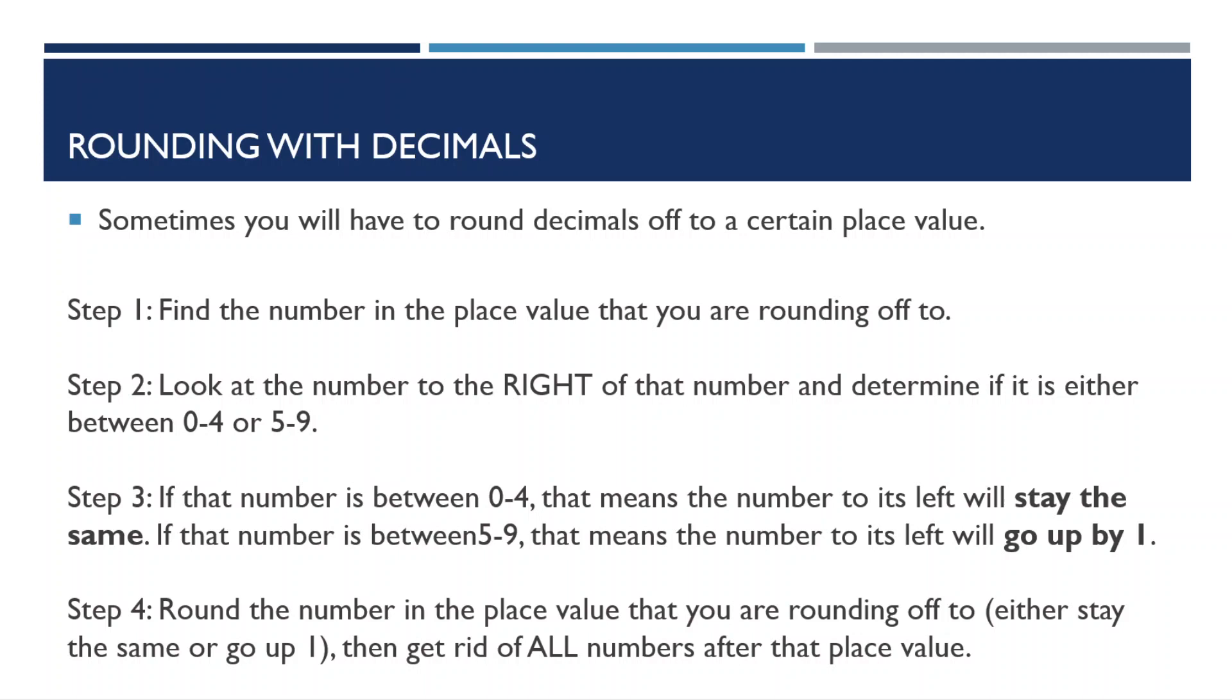Sometimes you'll have to round decimals off to a certain place value, especially if they go on for a long time, or even infinitely. There are some steps that you can follow to round off numbers. First, you'll find the number in the place value that you're rounding off to. Then look at the number to the right of that number, and determine if it's either between 0 to 4, or 5 to 9.